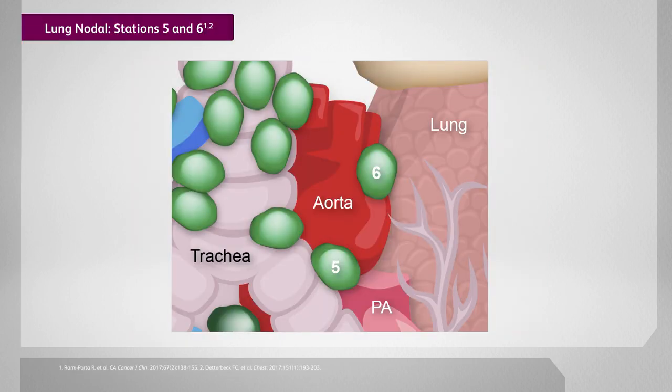The level 5 lymph node stations — the AP window — and level 6, the periaortic lymph node stations, are most commonly involved with left-sided tumors. Importantly, levels 5 and 6 are impossible to access with a mediastinoscopy and very difficult to access with an EBUS. A Chamberlain procedure can be used to stage these nodal stations. Another way to access these nodal stations is through a thoracoscopic VATS procedure, where your surgeon can perform a biopsy.